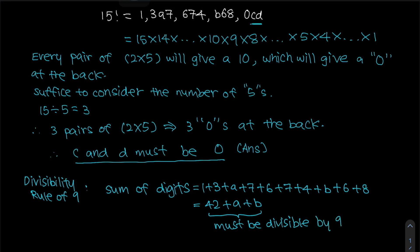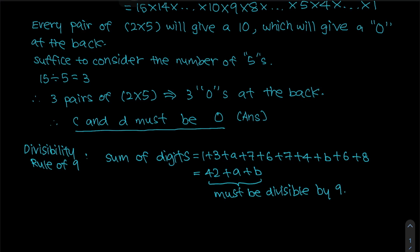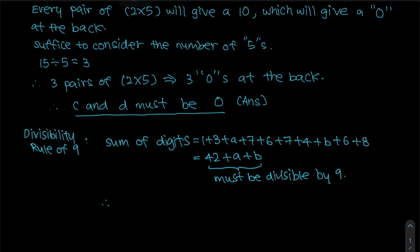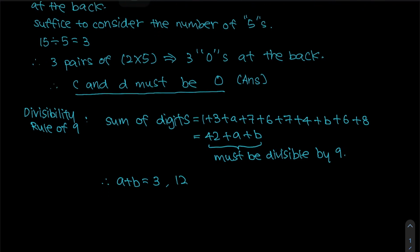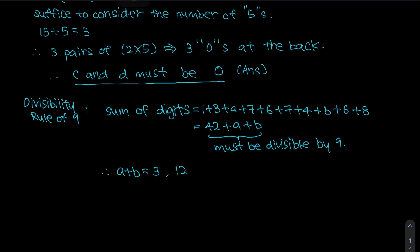Since 42 plus a plus b must be divisible by 9, what can we conclude about a plus b? We know that a plus b could be 3, because 42 plus 3 equals 45, which is divisible by 9. Or a plus b could be 12, because 42 plus 12 equals 54, also divisible by 9. A plus b cannot be 21, because a and b are single digits — each must be 9 or below. So a plus b can only be 3 or 12.